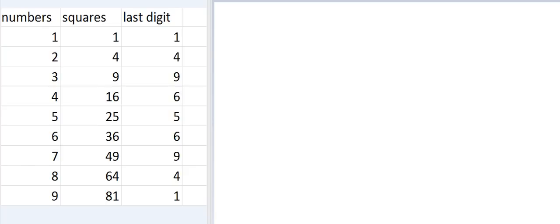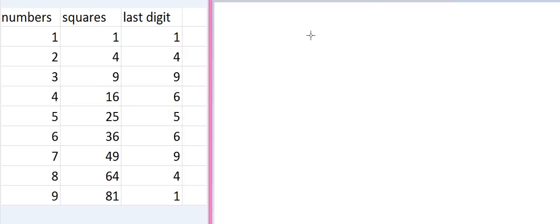For learning this trick, you must learn the squares of numbers from 1 to 9. You also need to learn the last digit of each square — for example, the last digit of 36 is 6, and the last digit of 64 is 4. I have written these out in a list, and we will always use this list to calculate any number's square root. Our number is 576.